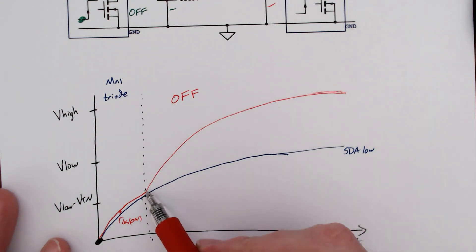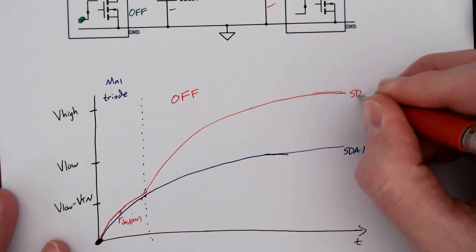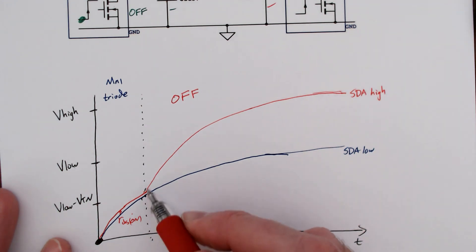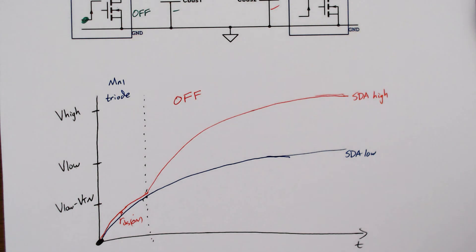The exact slopes at these points, when the MOSFET turns off, which means it puts those two nodes to be independent of each other, it will change. And exactly how they change depends on the values of the pull-up resistors.